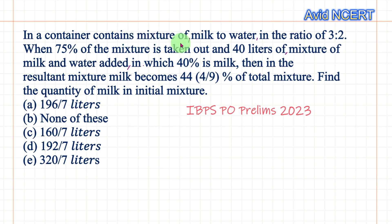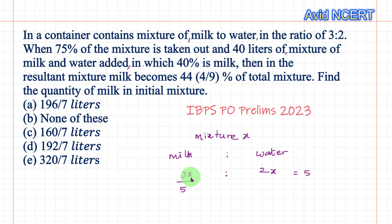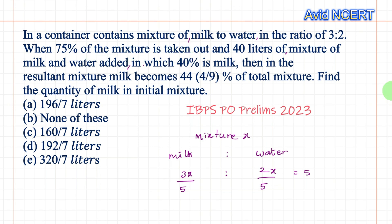From the first sentence, the container has a mixture where the ratio of milk to water is 3:2. We don't know the total amount of the mixture, so we take it as x. Therefore milk will be 3x/5 and water will be 2x/5, since 3 + 2 = 5, so milk is 3 out of 5 parts and water is 2 out of 5 parts of the mixture.